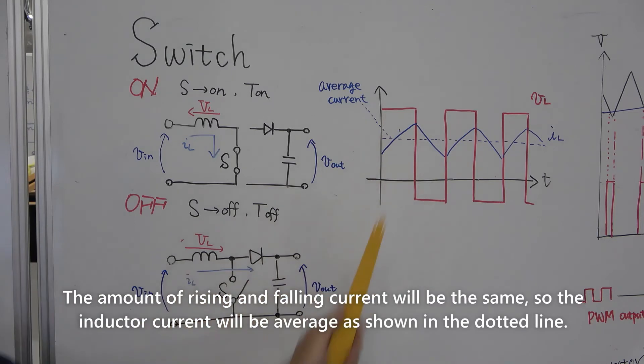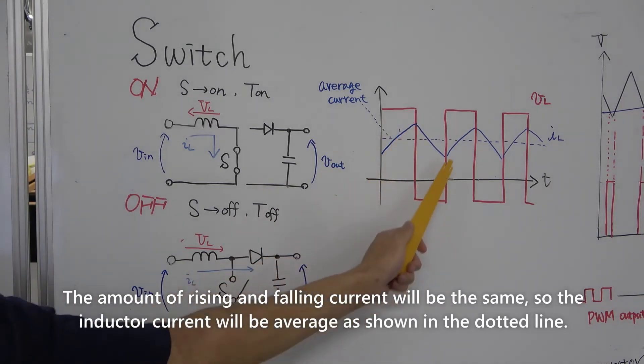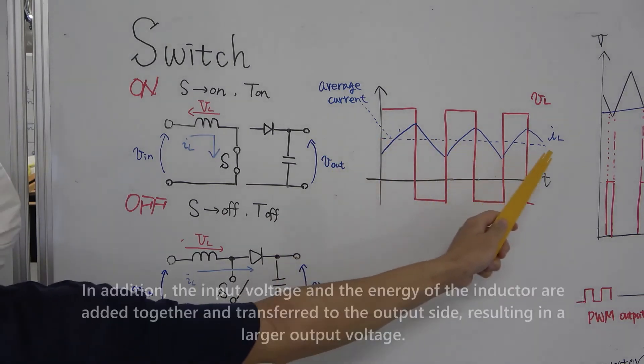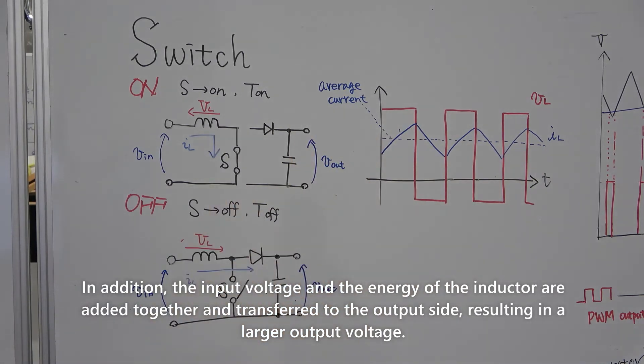The amount of rising and falling current will be the same. So, the inductor current will be average, as shown in the dotted line. In addition, the input voltage and the energy of the inductor are added together and transferred to the output side, resulting in a larger output voltage.